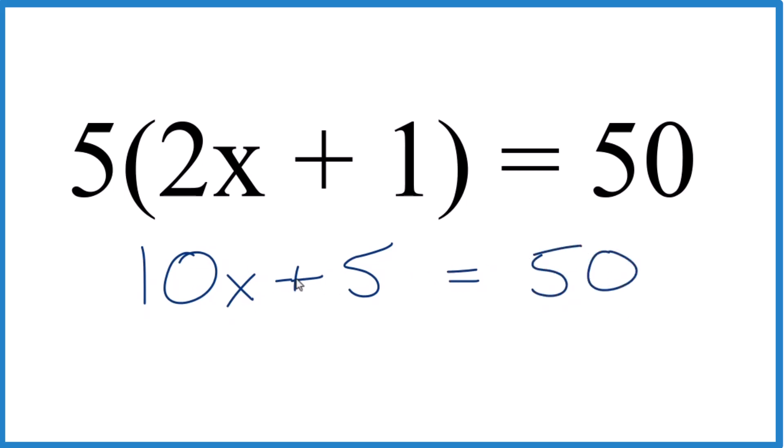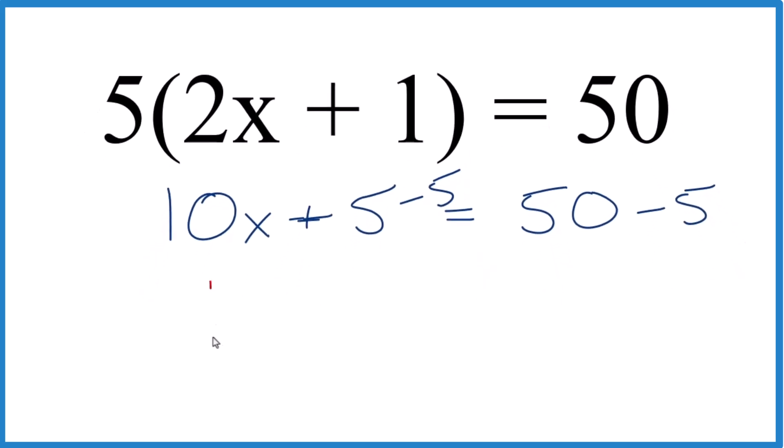At this point, let's get rid of the 5 here. Let's subtract 5 from both sides. So 10x and then 5 minus 5 is 0, so we don't need to write anything. 50 minus 5, that's 45.